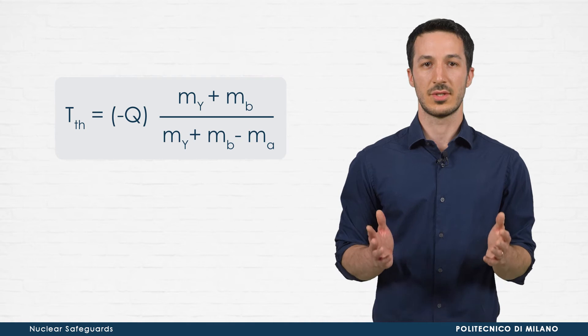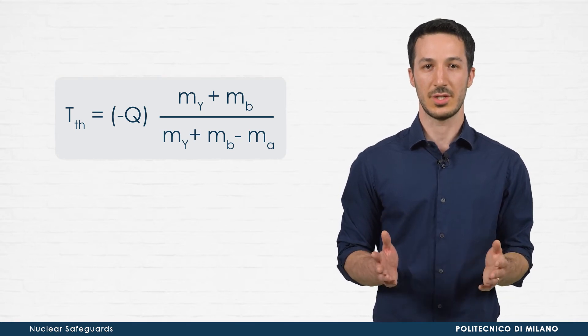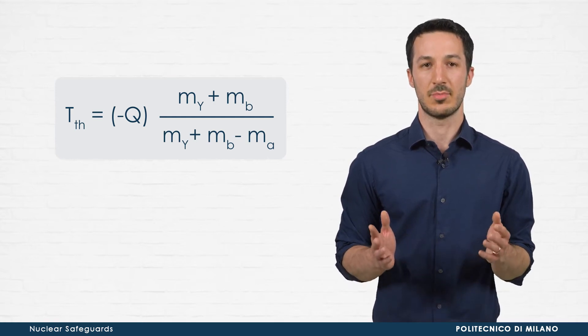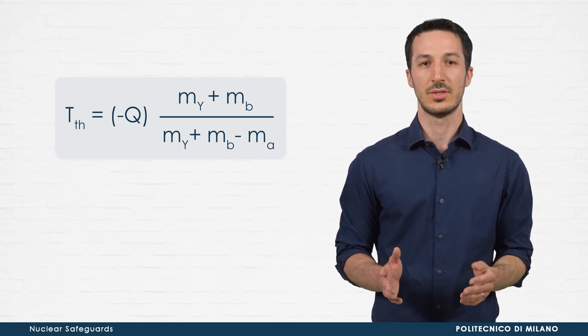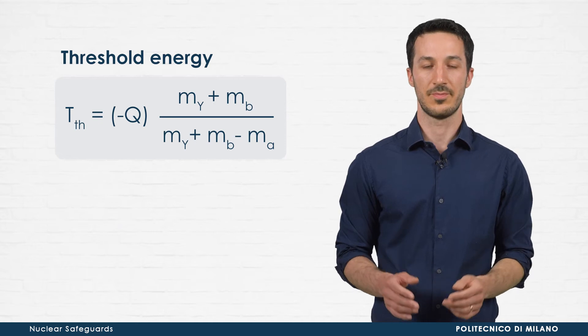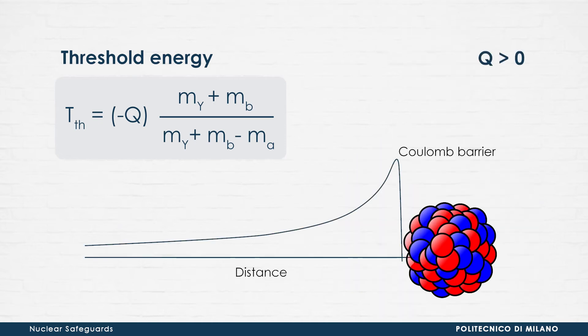One of the most interesting quantities that you can obtain from the energy analysis of the process is the minimum kinetic energy that the projectile must have for triggering the reaction. This energy is called threshold energy. For Q greater than zero, the reaction can occur at very low energies. But how much low? Well, if the projectile is a neutral particle, such as a neutron, the reaction can be triggered even at energies corresponding to the motion of thermal agitation.